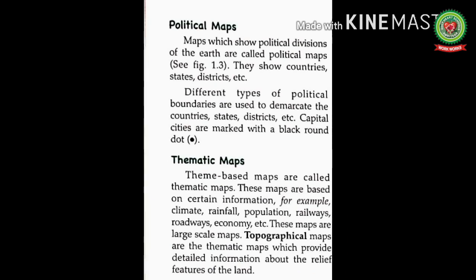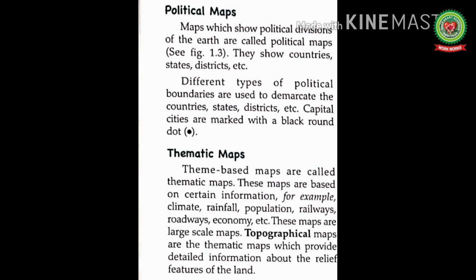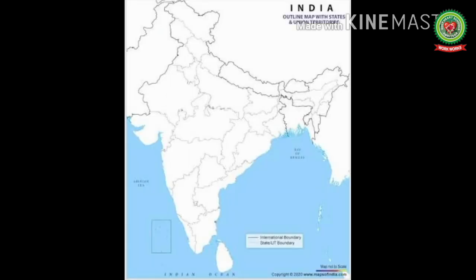Students, come to page number 12. The next type is political maps. Maps which show political divisions of the earth are called political maps. They show countries, states, districts, etc. — mark this definition. Different types of political boundaries are used to demarcate — means to show — the countries, states, districts, etc. Capital cities are marked with a black round dot. This is the example of a political map; you can see the state boundaries and international boundaries demarcated here.